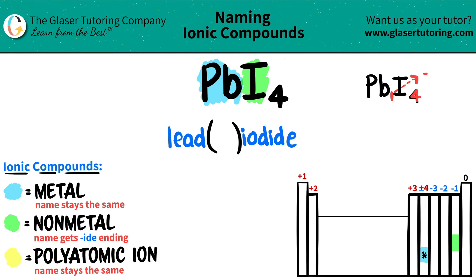This one crisscrosses up telling me that the iodine was a negative one charge. Non-metals always want to gain electrons and Pb is a plus four.